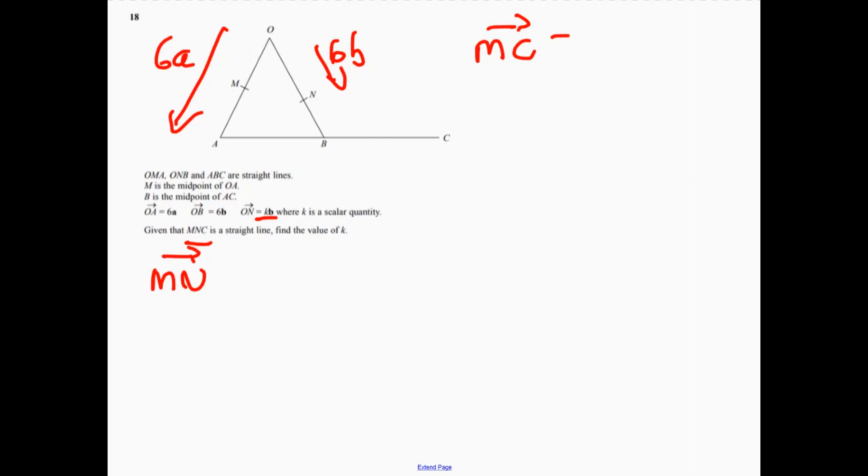So let's think about MC to begin with. Now, we're told that M is the midpoint. So therefore, that's going to be 3a. So that's this part just here. Now we need to add vector AB. But we actually need to add it twice as well.